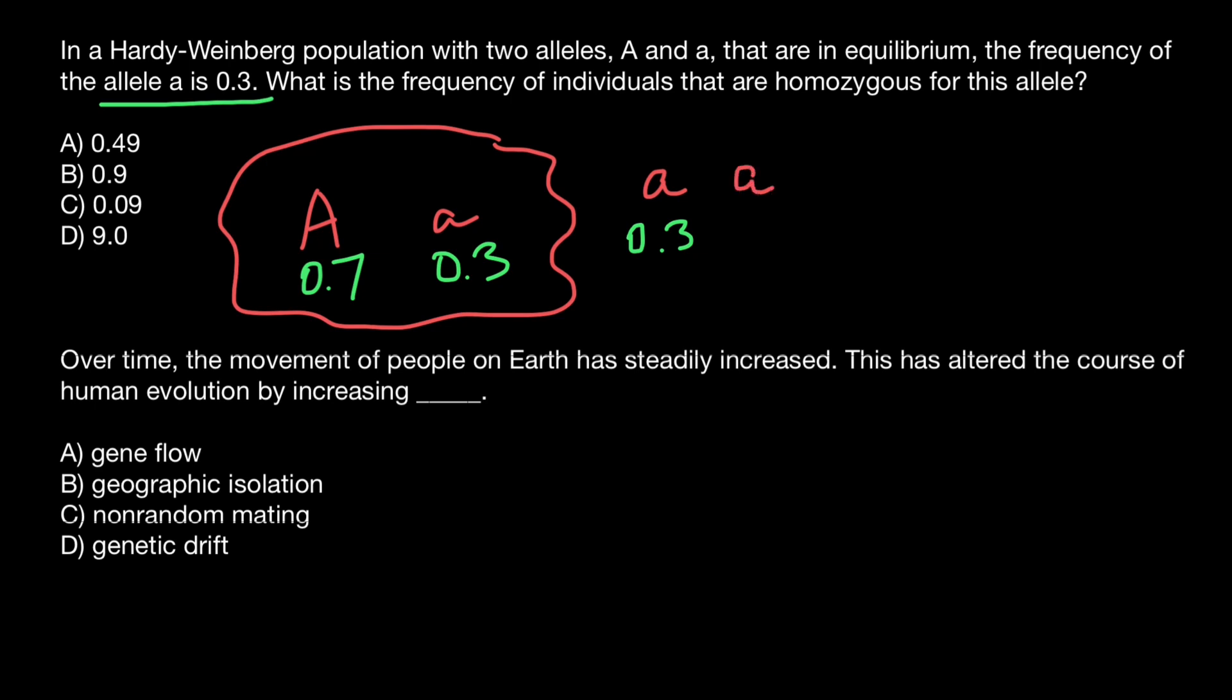And again, the probability is going to be the same, 0.3. So what is the probability of this genotype in this population? We just have to multiply these two independent probabilities for each allele.